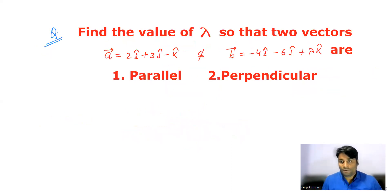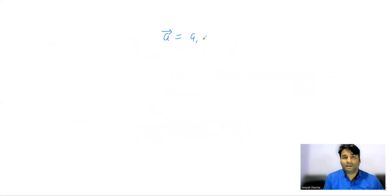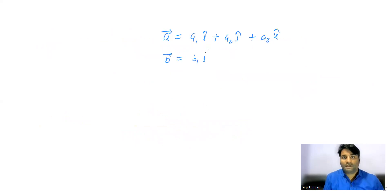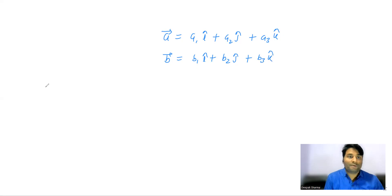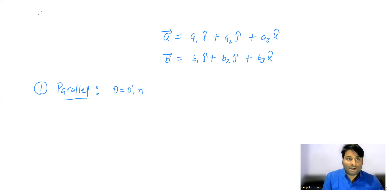Now let me tell you one more concept. Suppose vector a = a1 i cap + a2 j cap + a3 k cap and vector b = b1 i cap + b2 j cap + b3 k cap. These two vectors will be parallel when theta is either 0 or pi.